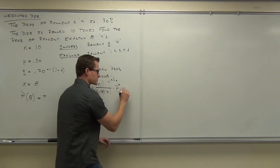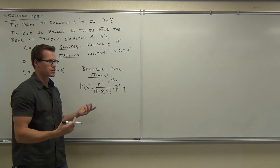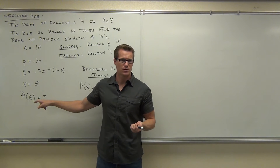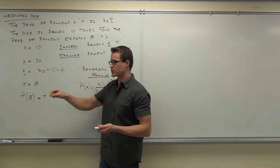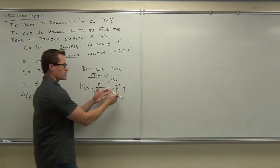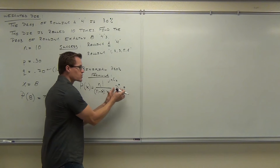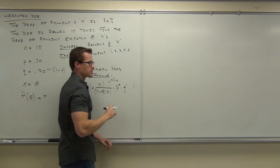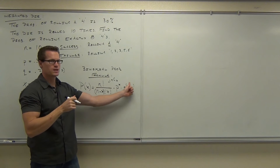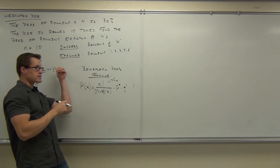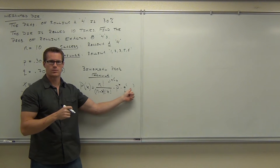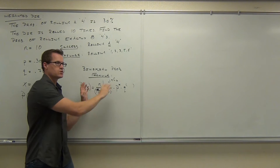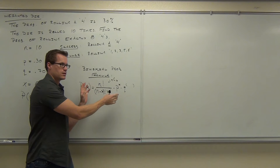We also have to multiply every failure times the probability of failure, because we're looking for an exact number here. In our situation, we actually want eight successes and two failures. We want two failures in order to get those eight successes. So we have to multiply not only by the probability of success a certain number of times, we also want the probability of failure a certain number of times. If we have X successes, how many failures do we want? In variable form — N minus X.